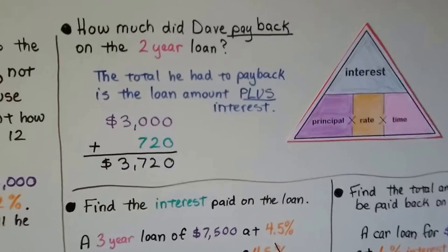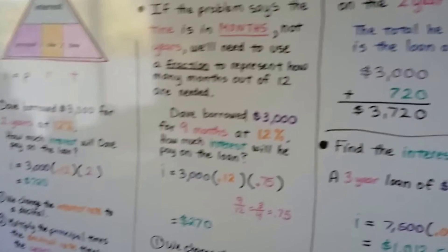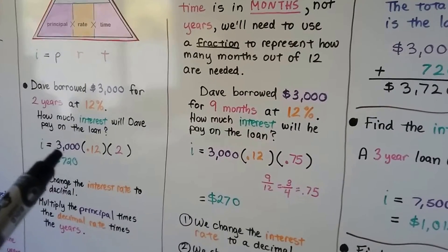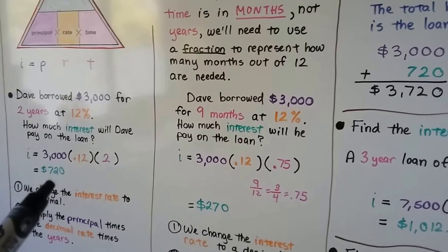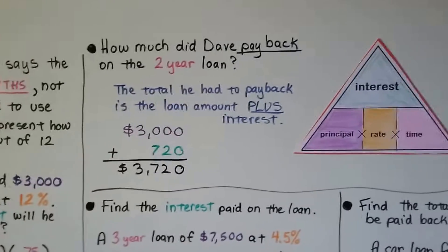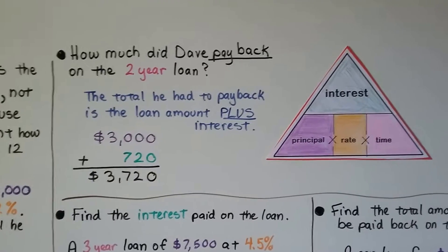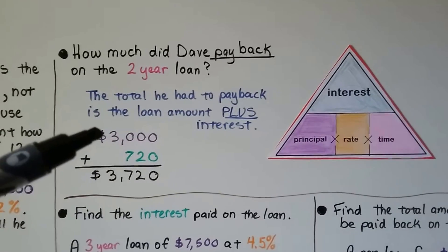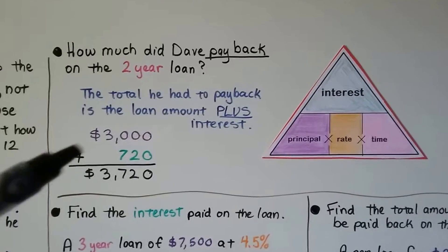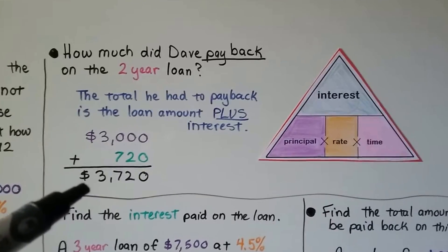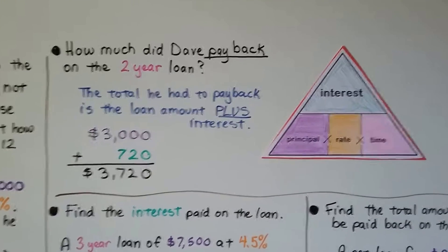How much did Dave pay back on that two-year loan? The loan was for $3,000 at 12% for two years, and the interest was $720. The total he had to pay back is the loan amount plus the interest — $3,000 plus $720. He borrowed $3,000, but after the two-year loan he had to pay back $3,720 total.